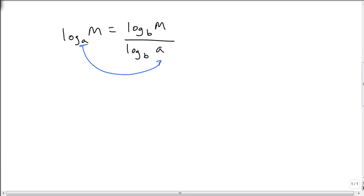B can be anything we want it to be. What we're going to use the most in this class and in the real world is to put it into something that our calculators can use, which is the common log of M over the common log of A, or the natural log of M over the natural log of A. Either of these is perfectly acceptable.